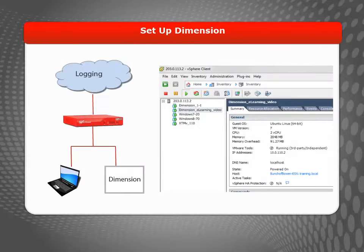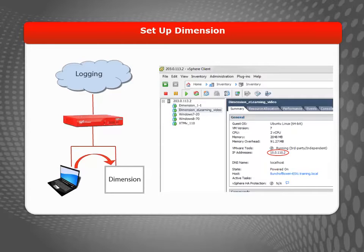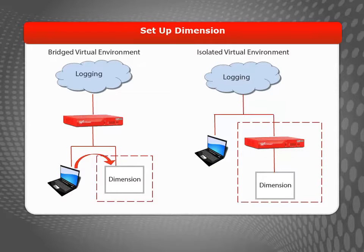Once your virtual machine is powered on, you'll see the IP address assigned to Dimension through DHCP. Use this address to connect to Dimension and start the Dimension Setup Wizard. If your workstation and Dimension are not installed on the same network, you may not be able to connect and start the Dimension Setup Wizard unless you apply NAT, or Network Address Translation.